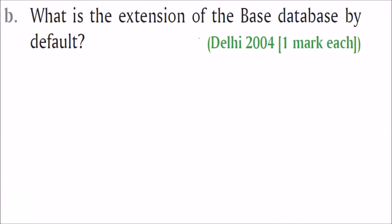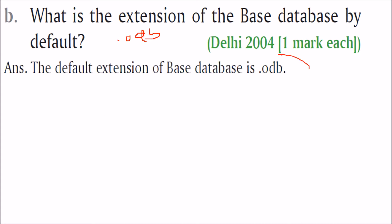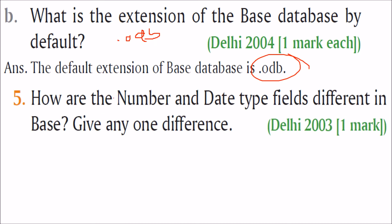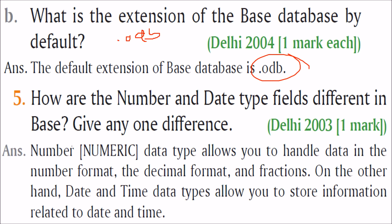The default extension of a Base database is .odb. How are number and date type fields different? The numeric data type allows you to handle data in number format — for example, decimal format and fractions. On the other hand, the date and time data type allows you to store information related to date and time.